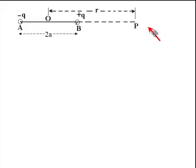So ABP is an axial line. P is a point where we will try to find the electrical field due to this dipole.